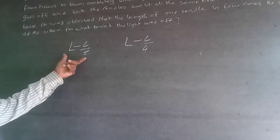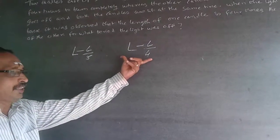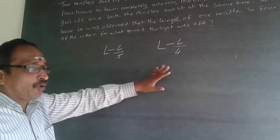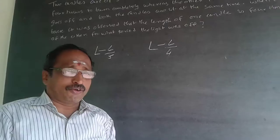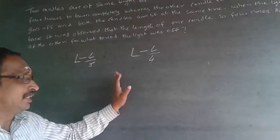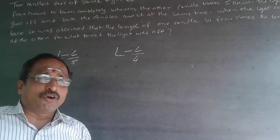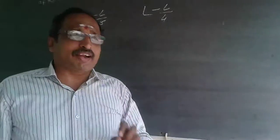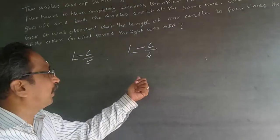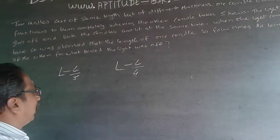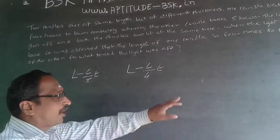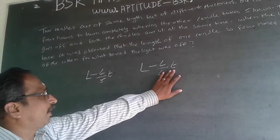Now, this is the length remaining after melting for each candle after some time. But I don't know at what time I am observing the candles. Because I don't know when I am seeing it, I'll have to introduce a variable for time. I'll introduce the constant factor t for the time of melting, so the remaining lengths become expressions in t — and this t is what we need to find.